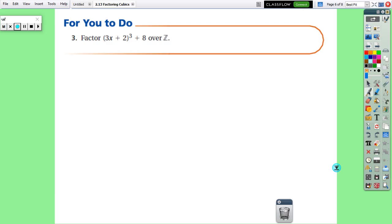So if we start with (3x + 2)³ + 8, we can rewrite this as (3x + 2)³ + 2³. Sorry, not 3 cubed, oh my gosh, 2 cubed.